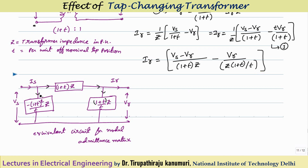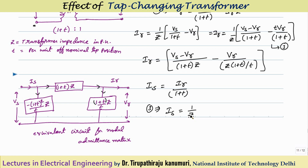Now for the sending end, I want the shunt branch element and to verify the series element is the same. The sending end current Is = Ir / (1+T). From equation 3, substituting and dividing Ir by (1+T), Is = (1/Z) × [Vs/(1+T)² − Vr/(1+T)].